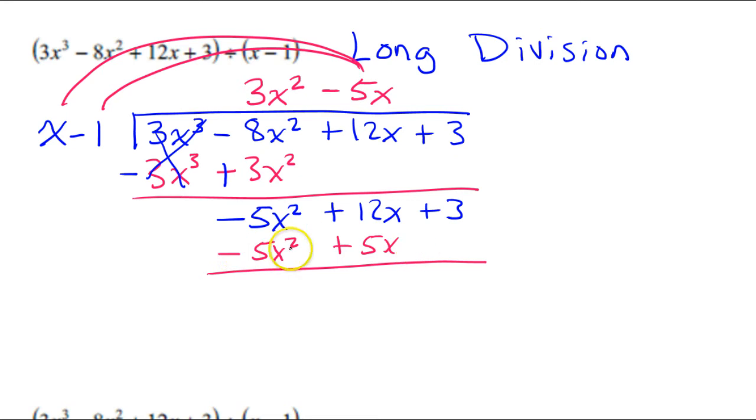And then we subtract by changing the signs. So this will become positive, and this will become negative. That's how you subtract. You basically distribute your negative sign, and it changes all the signs. So again, these will cancel out. I have 12 minus 5, so that will be 7x. And then I will just bring down the 3. And then one more time, I start over.